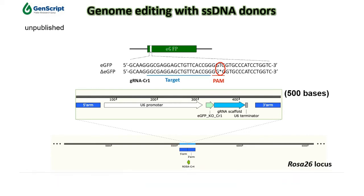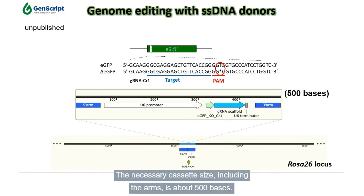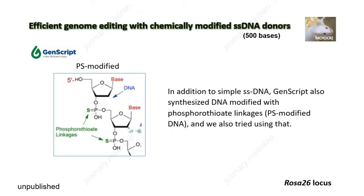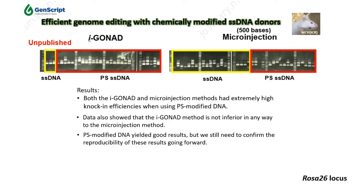Thus, we also created mice where a guide RNA-expressing cassette was introduced into their genome. The necessary cassette size, including the arms, is about 500 bases. In addition to simple single-stranded DNA, GenScribe also synthesized DNA modified with phosphorothioate linkages — PS-modified DNA — and we also tried using that. The results showed both the I-Gonad and microinjection methods had extremely high knock-in efficiencies when using PS-modified DNA. Data also showed that the I-Gonad method is not inferior in any way to the microinjection method. PS-modified DNA yielded good results, but we still need to confirm the reproducibility of these results going forward.